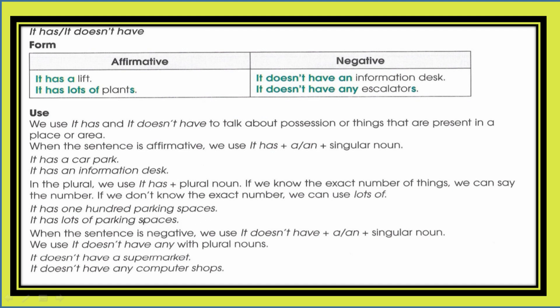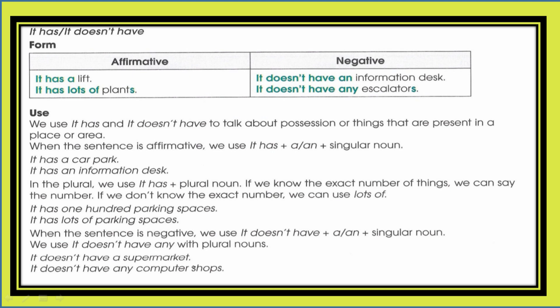For example: 'it has 100 parking spaces' or 'it has lots of parking spaces' — 'parking spaces' means spaces for parking cars. When the sentence is negative, we use 'it doesn't have' with 'a' or 'an' and a singular noun. For example: 'it doesn't have a supermarket', 'it doesn't have any computer shops'.